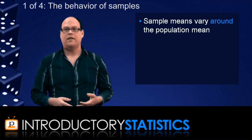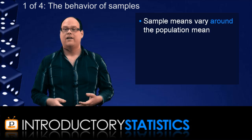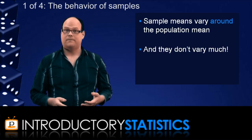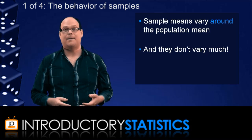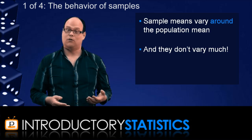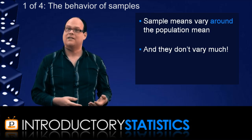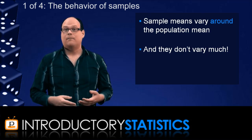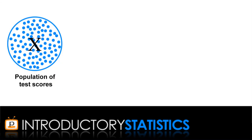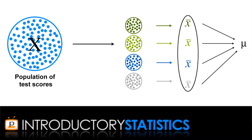First, while sample means from a population do vary, they vary around the population mean. Second, they don't vary much. So any sample mean you collect is going to be not too far away from the population mean. If we start off with a population X of numbers, there is actually a whole population of potential sample means you could calculate from X. And this population is denoted X bar. The sampling distribution of the mean is the probability distribution that describes X bar.